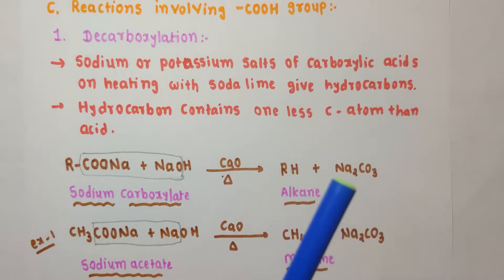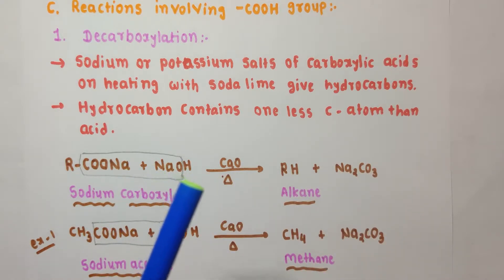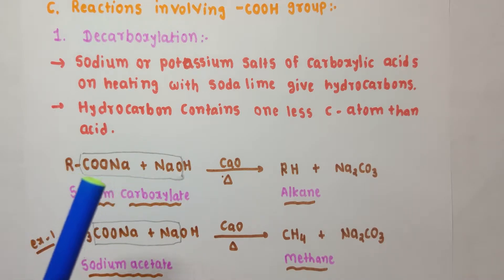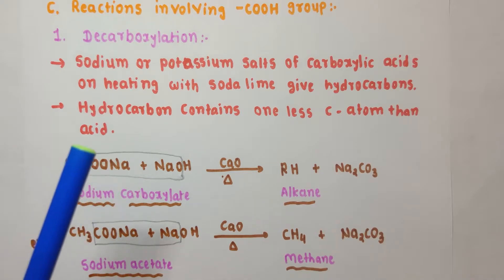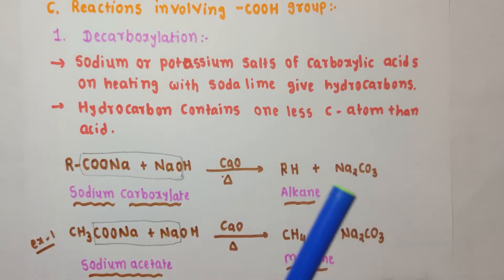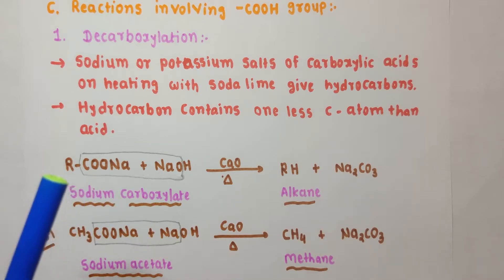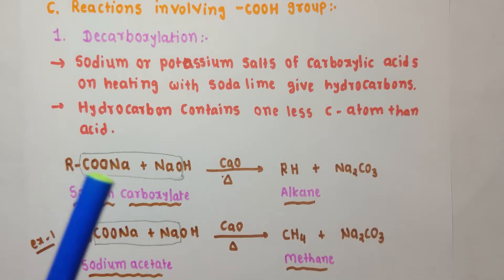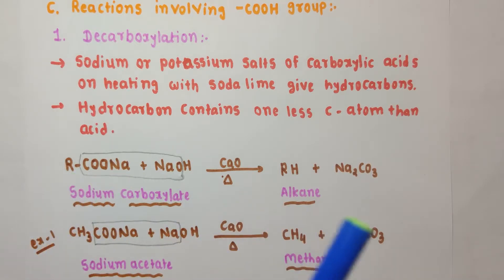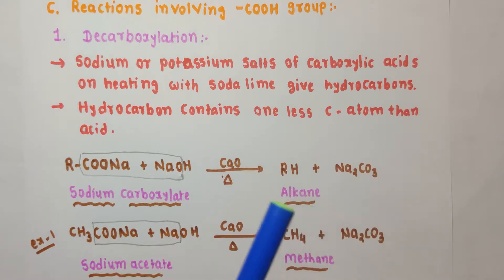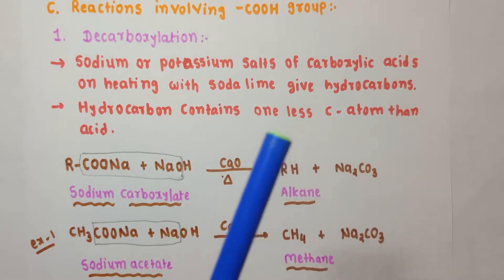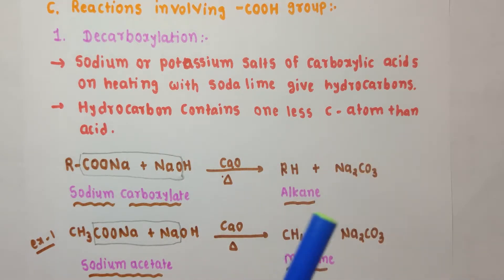How is Na2CO3 formed? From NaOH, the NaO part is eliminated, and from sodium carboxylate, the NaCOO part is eliminated. So Na2CO3 is eliminated from the mixture, and what you are left with is R and H — that is RH, your alkane. One carbon from the carboxylic acid has been removed in the form of Na2CO3, so the alkane you get has one less carbon atom.